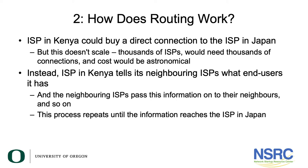Instead, the ISP in Kenya tells its neighboring ISPs what end-users it has, and the neighboring ISPs pass that information on to their neighbors, and so on. This process repeats until the information reaches the ISP in Japan.